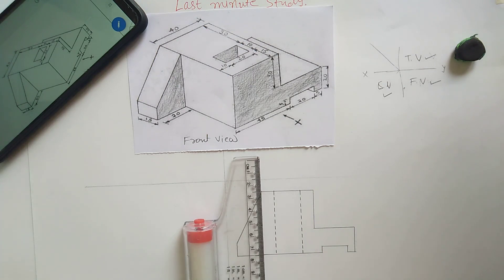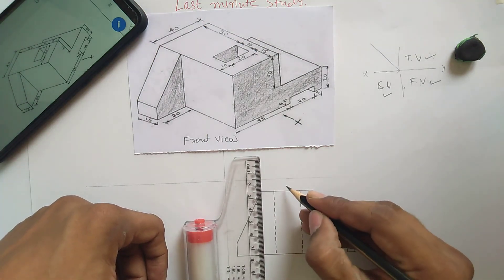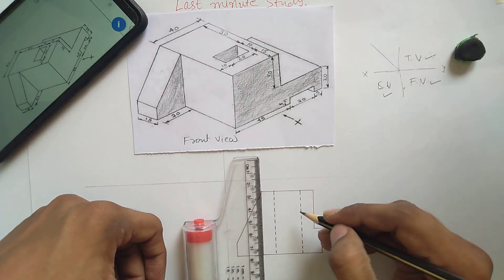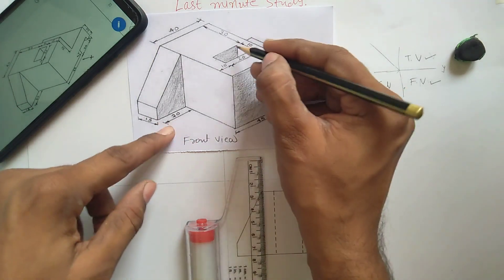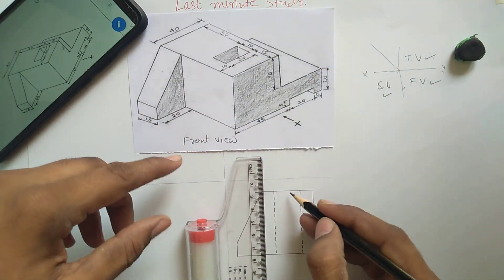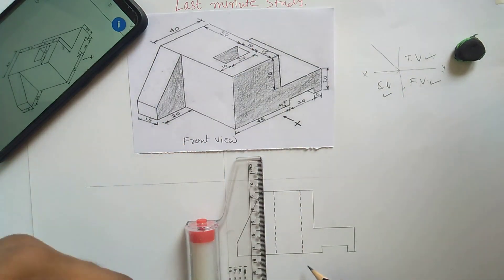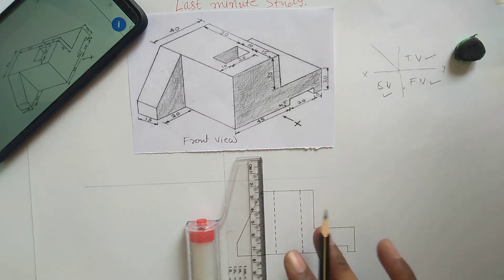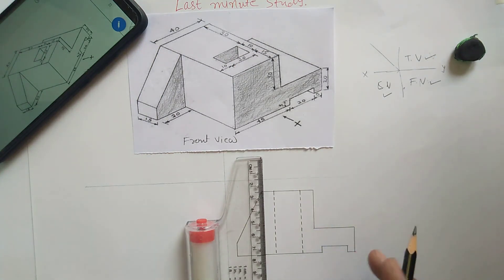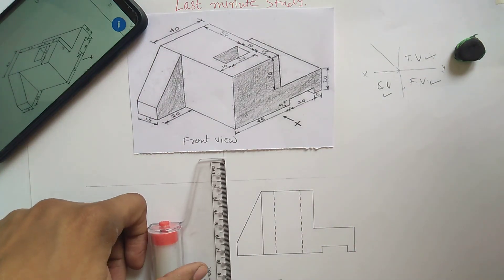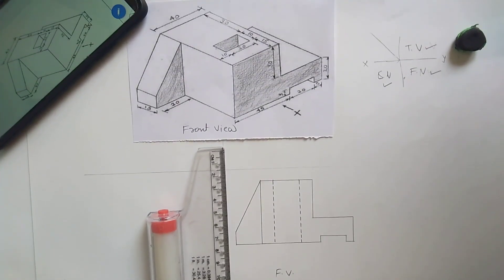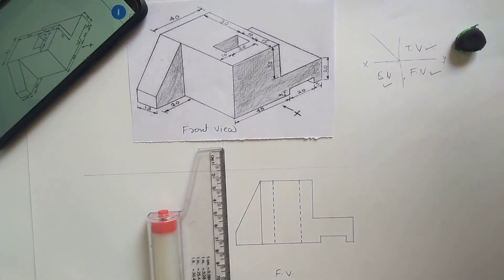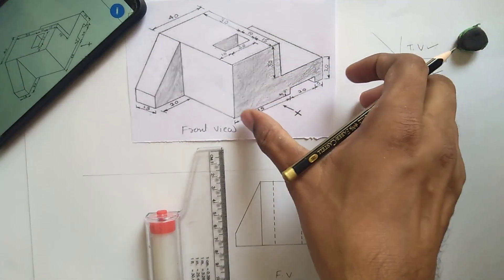No need to draw a center line because this is not a circle. If it is a cylindrical surface then you have to draw a center line to indicate it is a circle. So this is the front view of the given object.